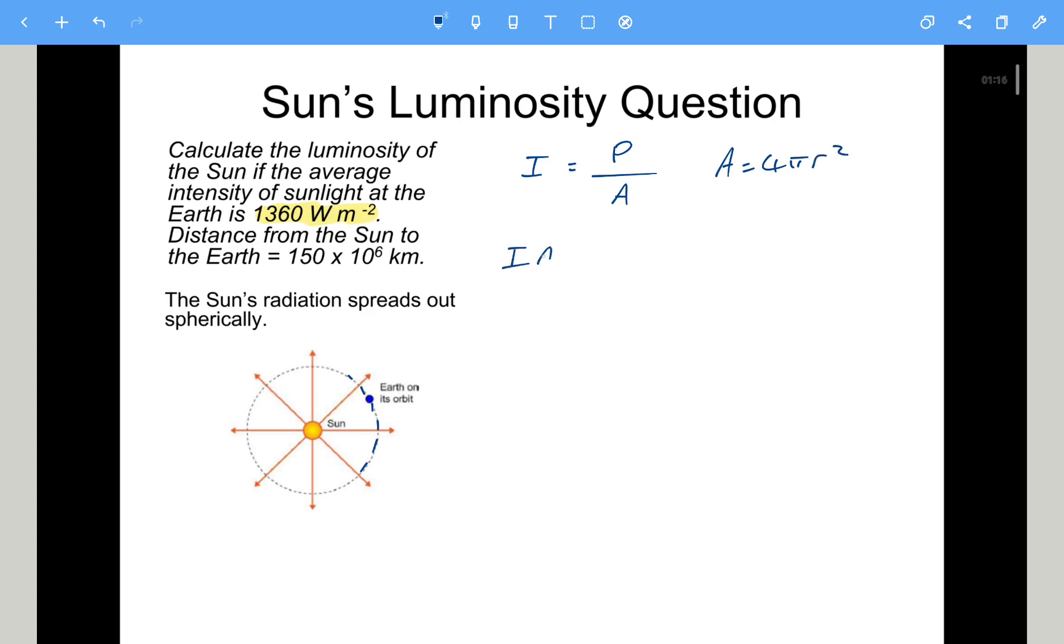So let's rearrange. So intensity times area will be equal to the power. So intensity, 1,360 watts per metre square, multiplied by the area. So it's going to be 4 pi r squared. And the distance r is the distance from the Sun to the Earth. So that's going to be multiplied by 150 times 10 to the power of 9. And then make sure that you square that value.